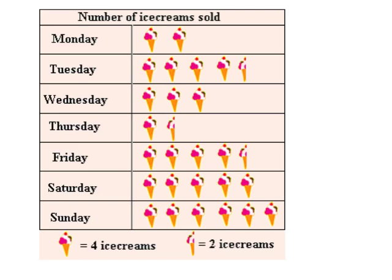So let's look at each day of the week. Pause the video and see if you can figure out how many ice creams were sold on each day of the week. Remember, one ice cream cone is four ice creams and half of an ice cream cone equals two ice creams. So if you guessed that on Monday eight ice creams were sold, you are correct — four plus four is eight.